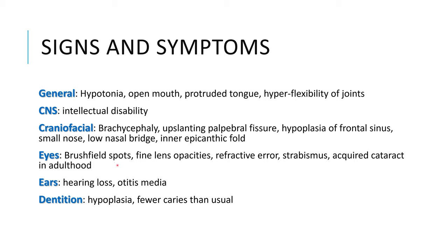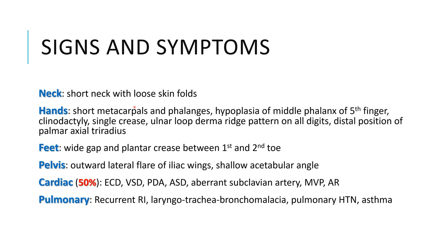In the eyes, there are Brushfield spots, fine lens opacities, various refractive errors like myopia or hypermetropia, strabismus or squint, and acquired cataract in adulthood. In the ears, there is hearing loss of both conductive and sensorineural type and occurrence of otitis media. In dentition, there is hypoplasia of the teeth, but it is partially protective against dental caries. The neck is short with loose skin folds.